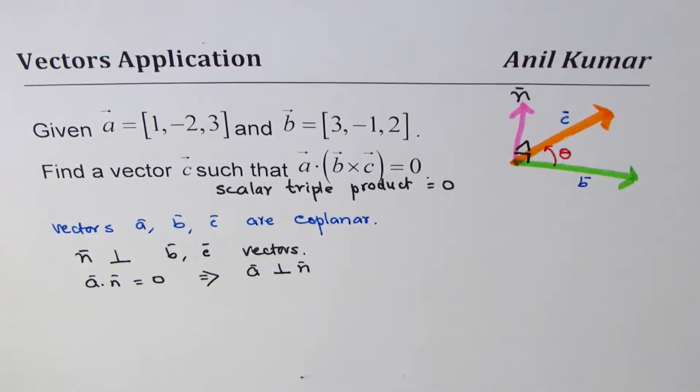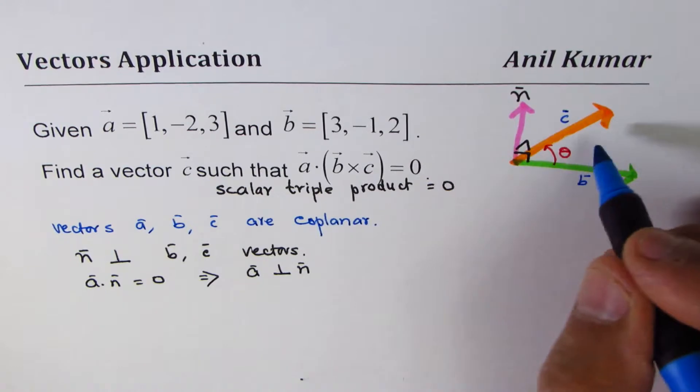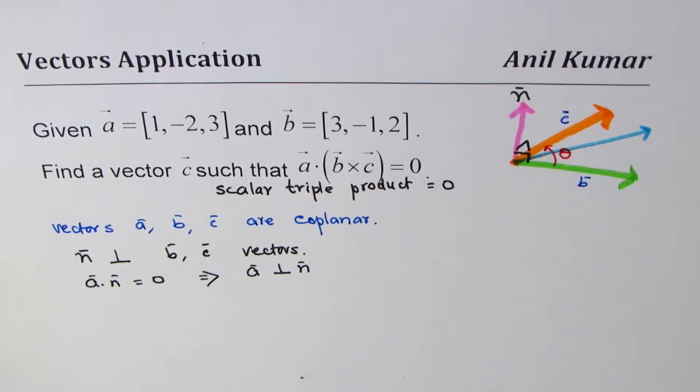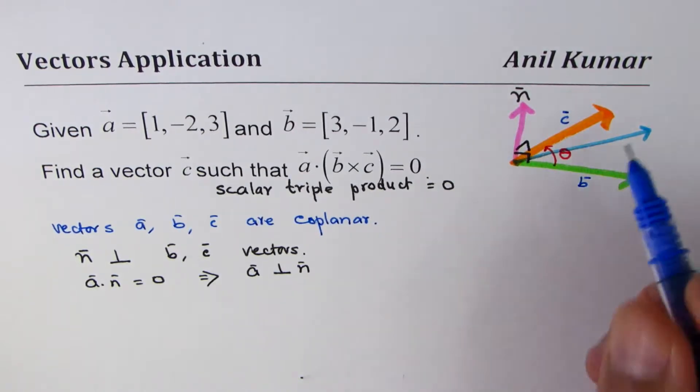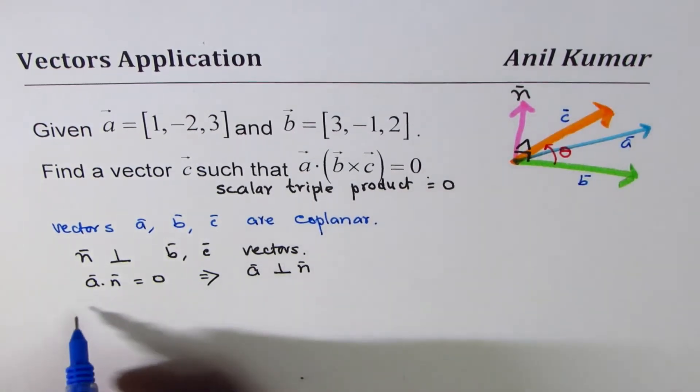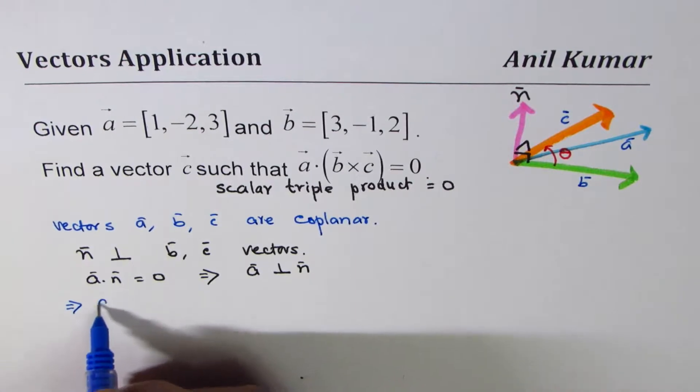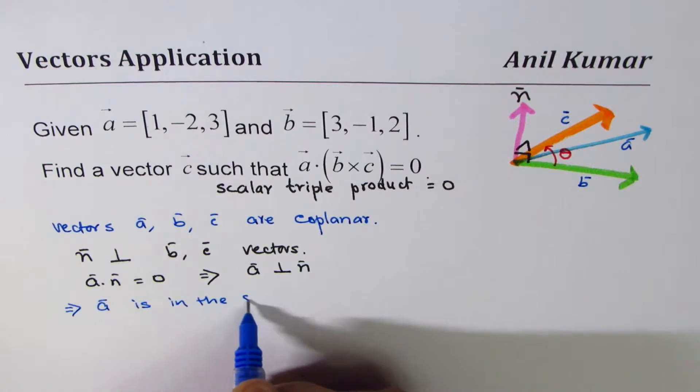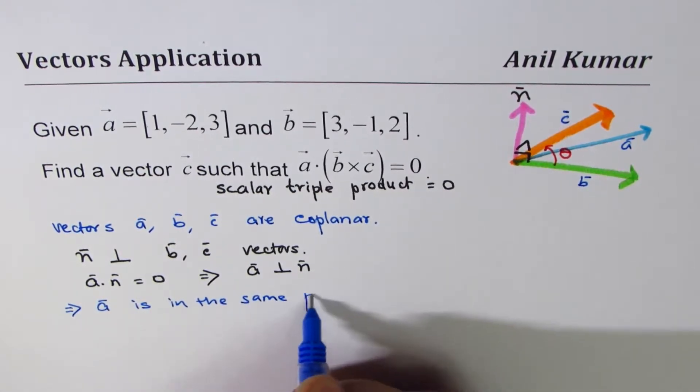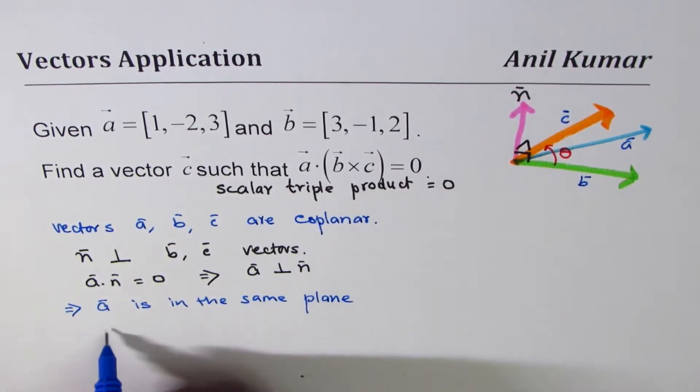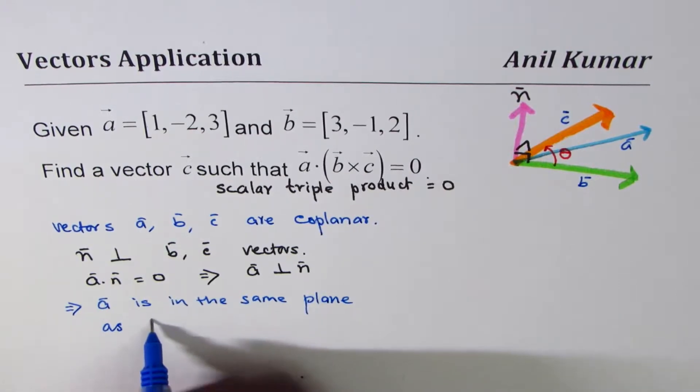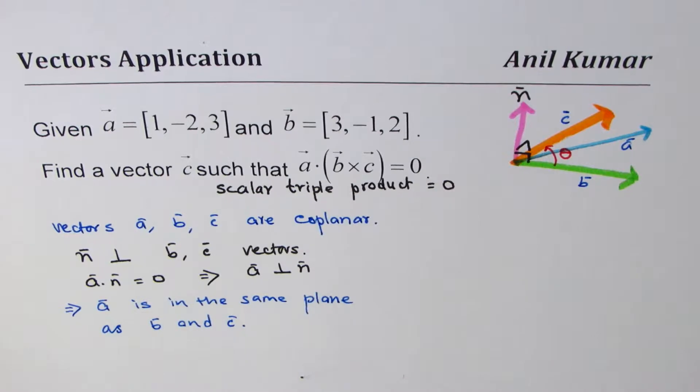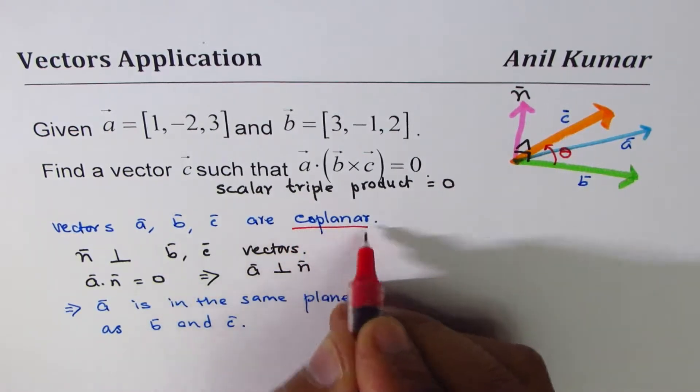If a is perpendicular to normal, that means a is in the plane of b and c. So a is somewhere like this. This implies that vector a is in the same plane as vector b and c, and that's why we're saying they are coplanar.